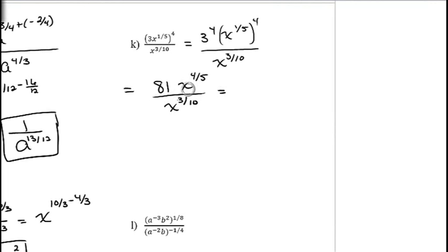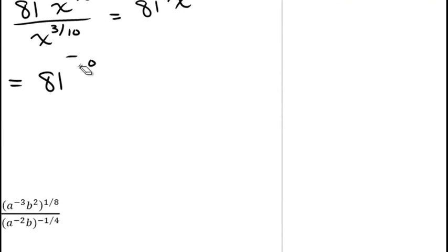To divide the variable terms, subtract exponents. Convert 4/5 to 8/10, then 8/10 minus 3/10 equals 5/10, which simplifies to 1/2. The final result is 81x to the 1/2.